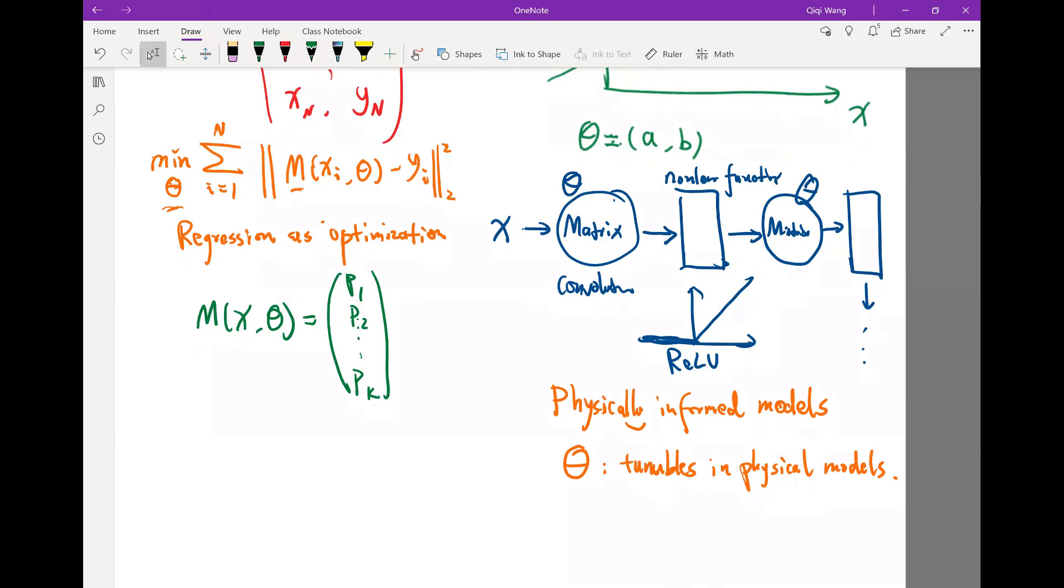And usually we can also formulate this into the classification into an optimization problem. So this is basically saying that I want to minimize over all the parameter theta and the most common objective function to use is the so-called cross entropy objective function. I'm not going to write down the whole formula here, but cross entropy.